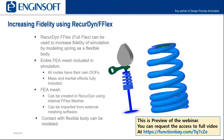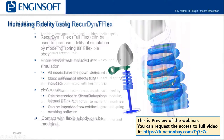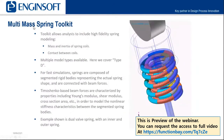The mesh can be created in Recurdyne using the internal FLEX mesher, which is what was used in this case to mesh the spring.